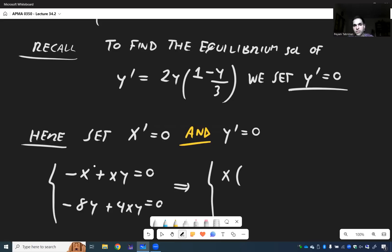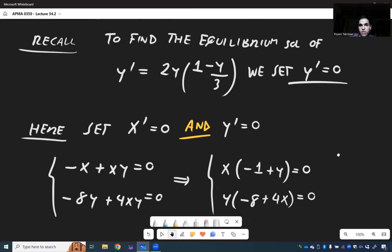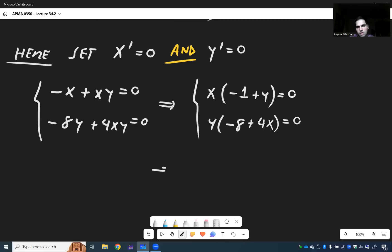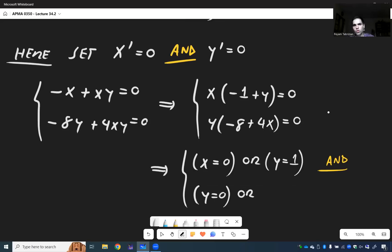Instead, factor out. So x times minus 1 plus y equals 0 and y times minus 8 plus 4x equals 0. So x equals 0, which gives us two choices each. So either x equals 0 or y equals 1 and y equals 0. Or, so minus 8 plus 4x equals 0, so x equals 2.